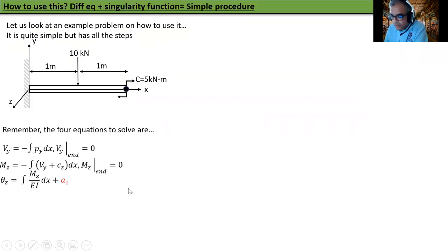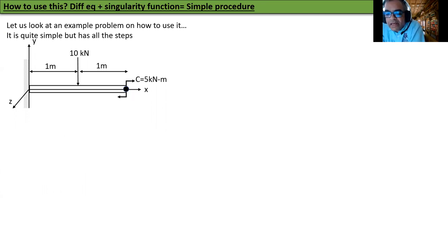Now let's look at a sample problem. We have a cantilever beam - one end is fixed and the other end has a force of 10 kilonewtons at one meter from the end and a clockwise torque of 5 kilonewton meters at the end of the beam. This is fairly simple but illustrates the procedure.